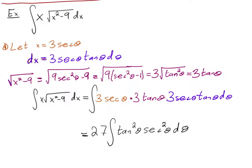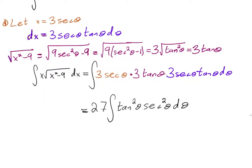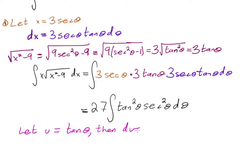This integral is an easy case. We use u-substitution: let u = tan θ, then du = sec²θ dθ. So 27 times the integral of tan²θ · sec²θ dθ becomes 27 times the integral of u² du.